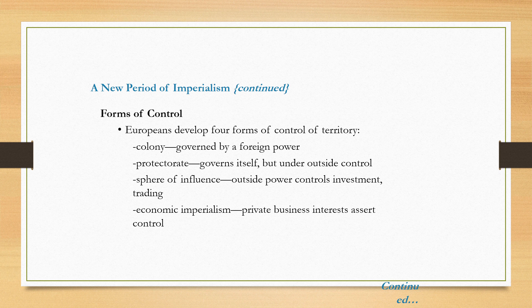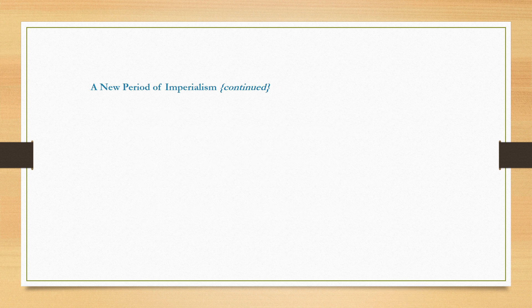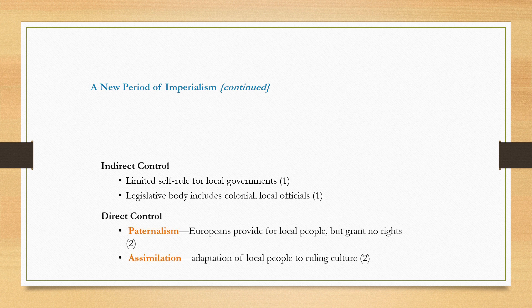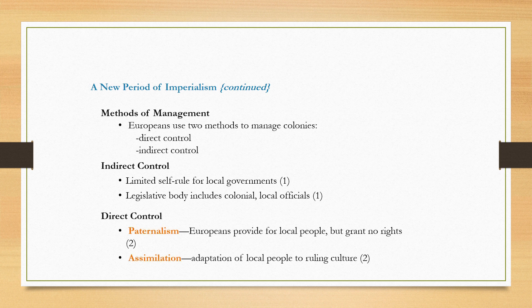Finally, there's economic imperialism, which is really where we are today — private business interests assert control. This was also going on throughout the 1700s and 1800s, like the East India Trading Company. As for how conquest worked, Great Britain conquered India by going in with their army — they had bigger guns, superior technology, and European diseases that tended to wipe out indigenous groups.